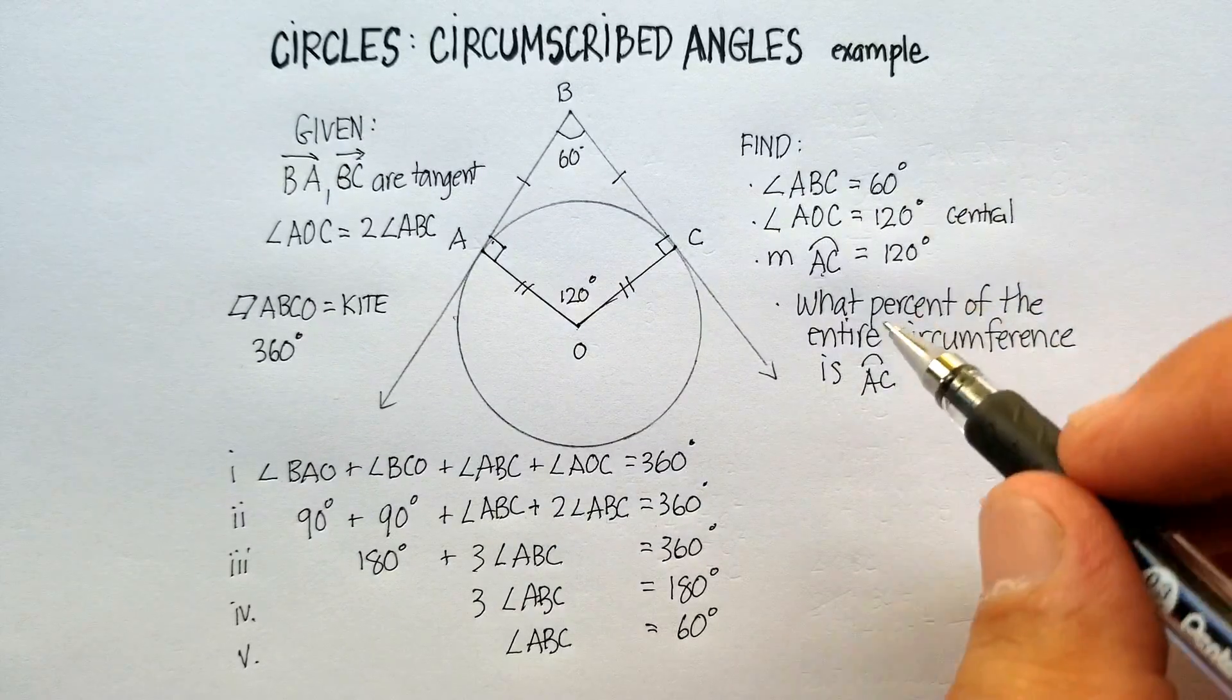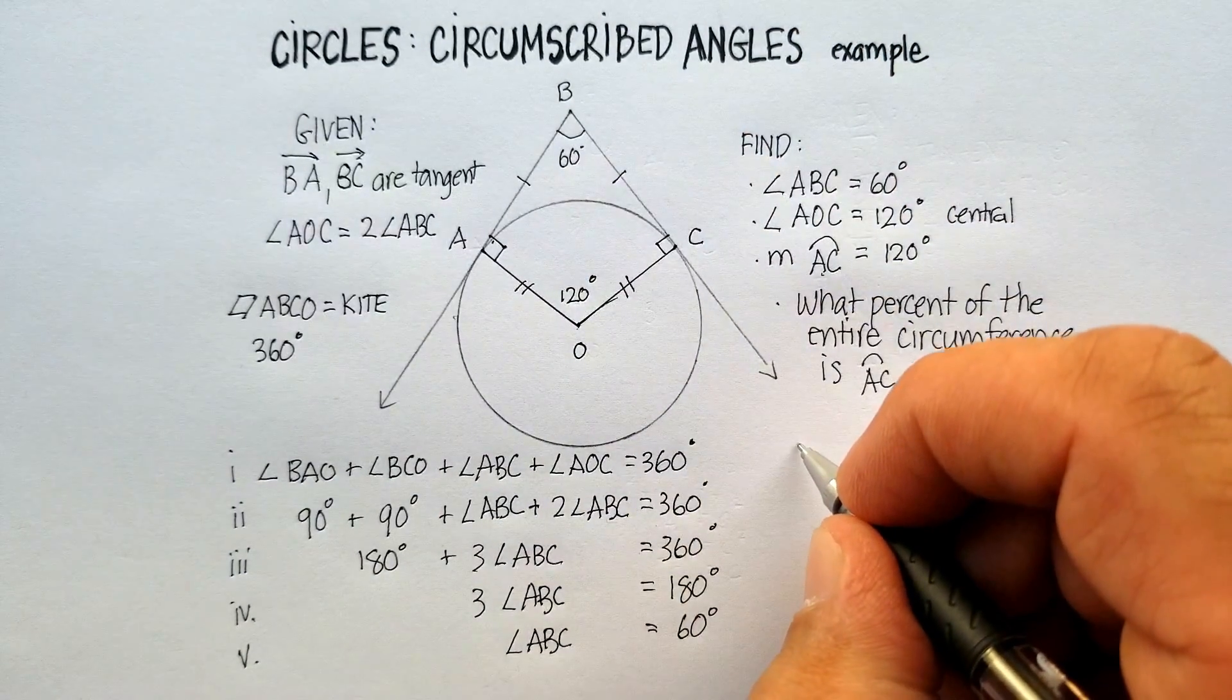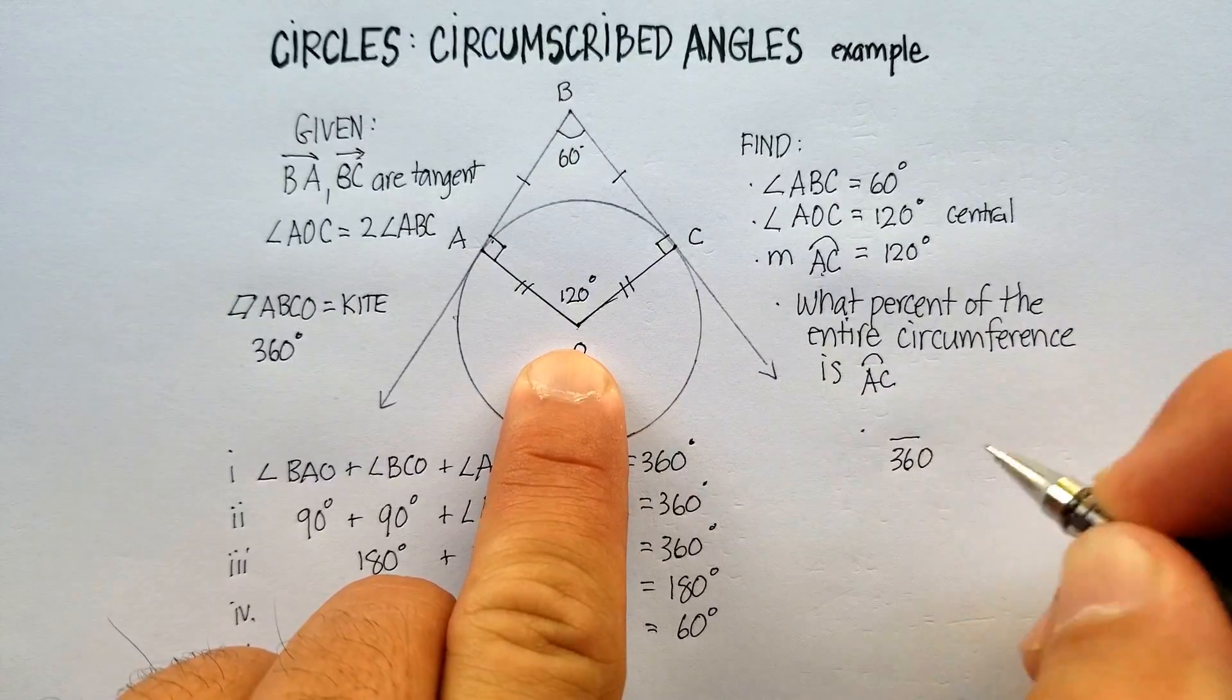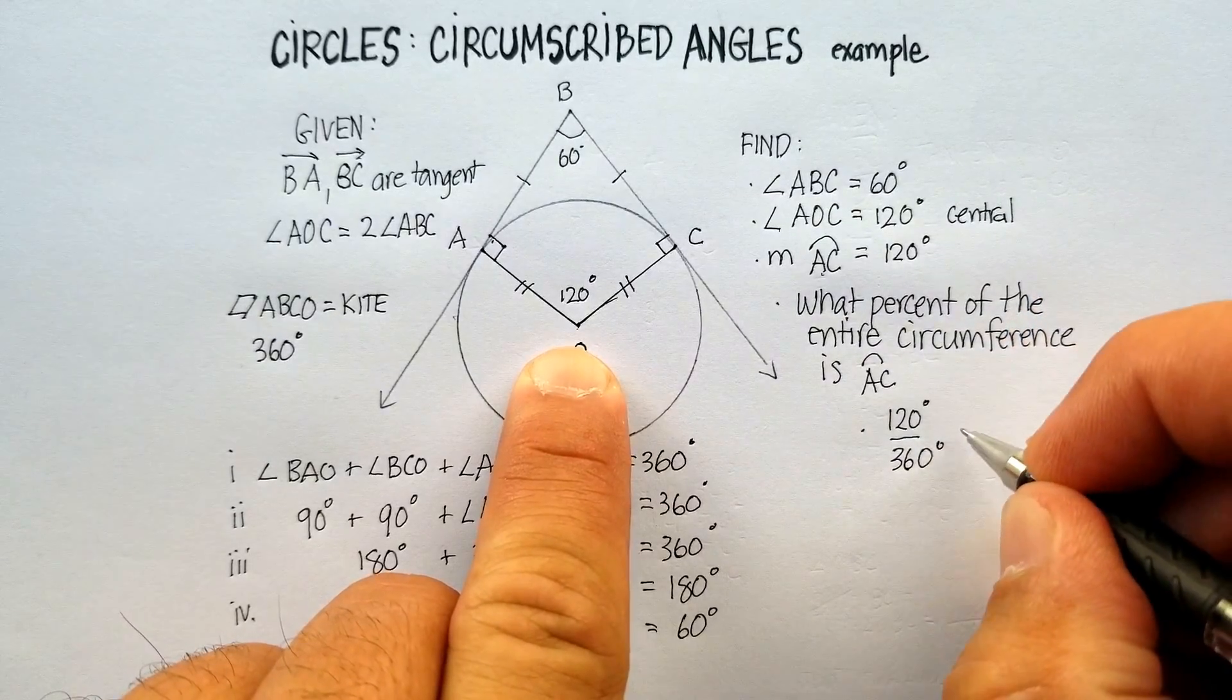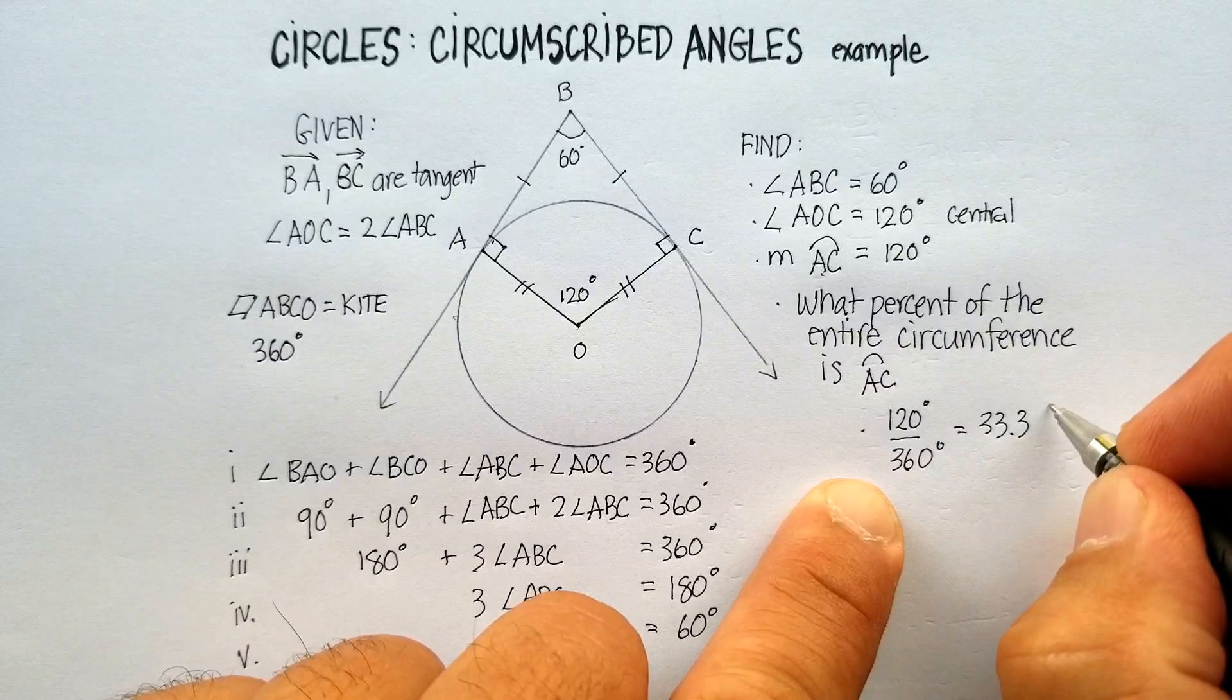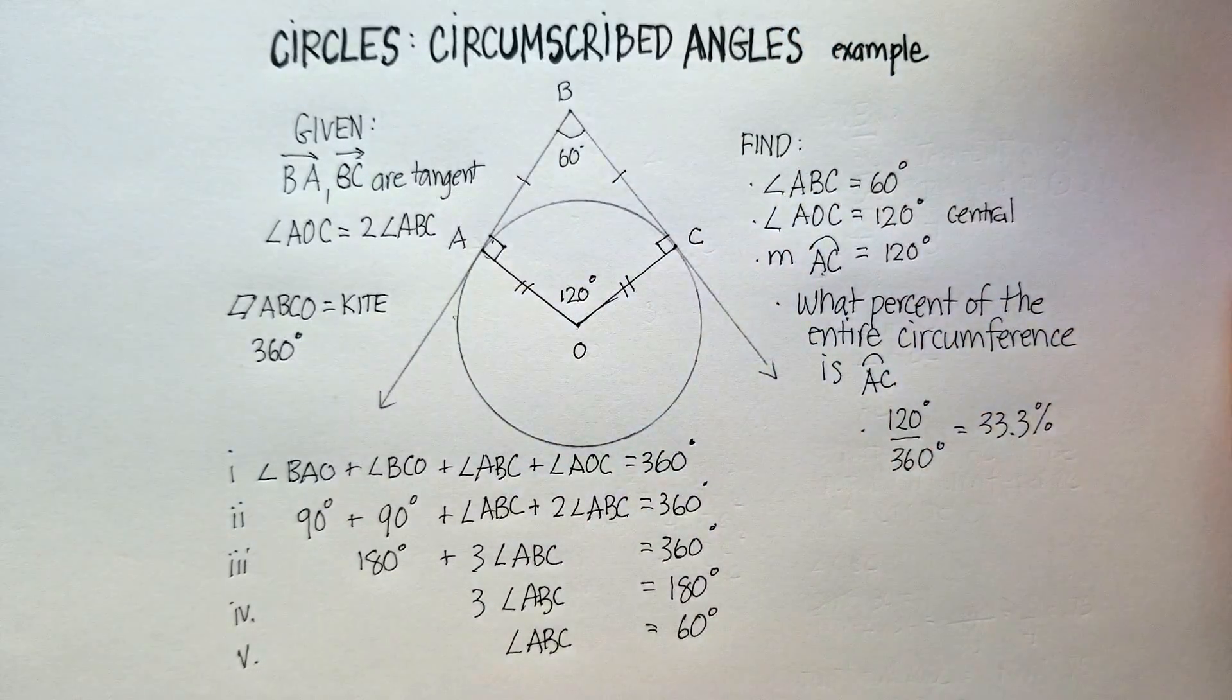Now, we can answer the very final question. What percent of the entire circumference is arc AC? Well, we know the entire circle. Let's go over here, answer the question. We know that the entire circle is 360 degrees. We know that this portion is 120 degrees. So, therefore, 33 and a third percent is the answer to this arc, is that 33 or just a third of the entire circumference of the circle.